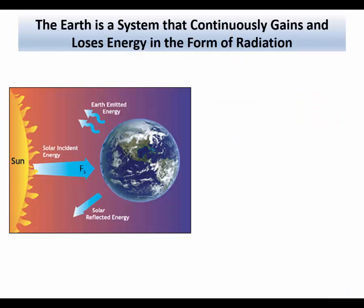Perhaps the most basic concept to understand is the idea that the Earth is a physical object that at the large scale continuously gains and loses energy in the form of radiation. We need to understand that the Earth is this great ball that is in orbit around the Sun, and it gains energy by being in the path of energy radiations coming from the Sun. Because it's a planet in orbit around the Sun, it's getting energy from the Sun.